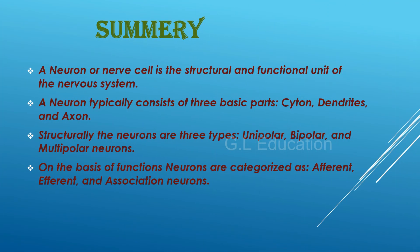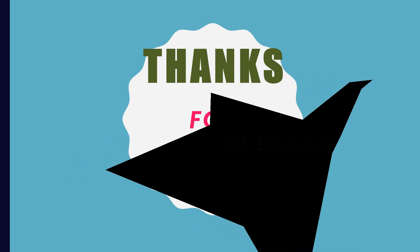Summary: A neuron or nerve cell is the structural and functional unit of the nervous system. A neuron typically consists of three basic parts: Cytone, Dendrites, and Axon. Structurally, neurons are of three types: Unipolar, Bipolar, and Multipolar. On the basis of functions, neurons are categorized as afferent, efferent, and association neurons.